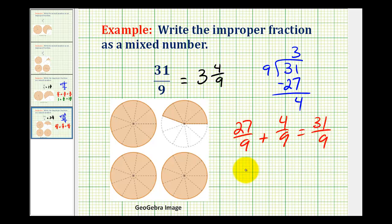But twenty-seven-ninths is equivalent to three. So as a mixed number, we have three and four-ninths. Let's do this.